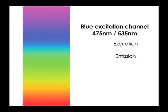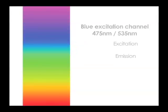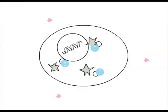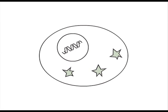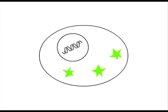Channel 1 of the cellometer is configured with an optical module with blue excitation and green emission. After incubation, non-fluorescent FDA is converted into fluorescein and retained by live cells. Under blue excitation, strong green fluorescence is emitted and detected. PI is excluded from live cells.